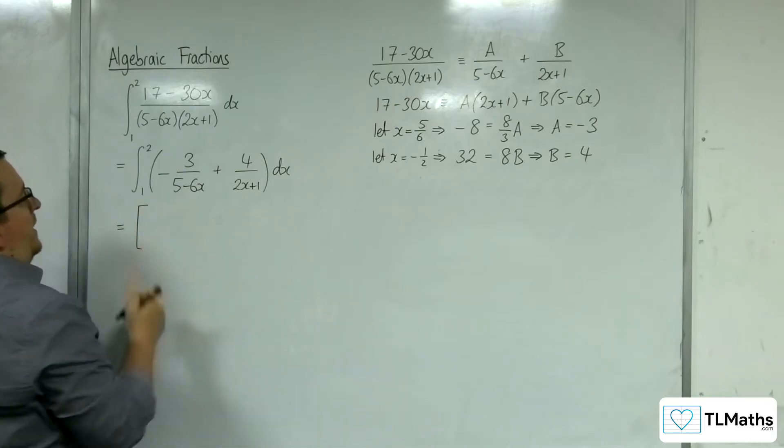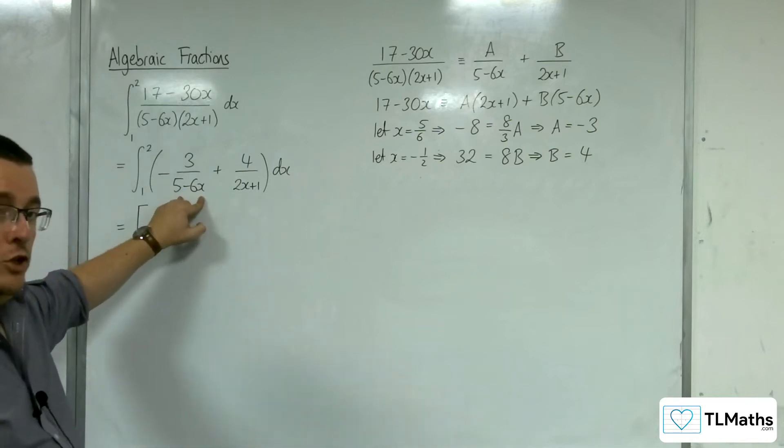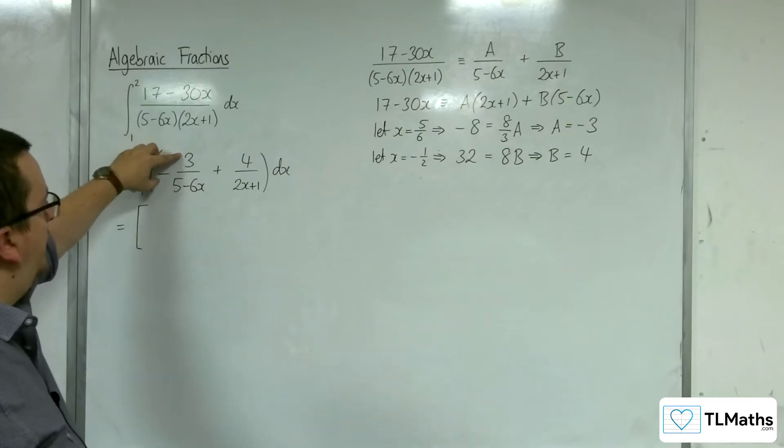So, this one here. Now, the 5 take away 6x, the denominator, differentiates to minus 6. We currently have minus 3 as the coefficient.